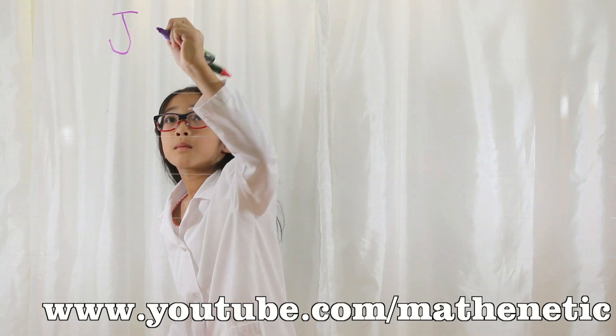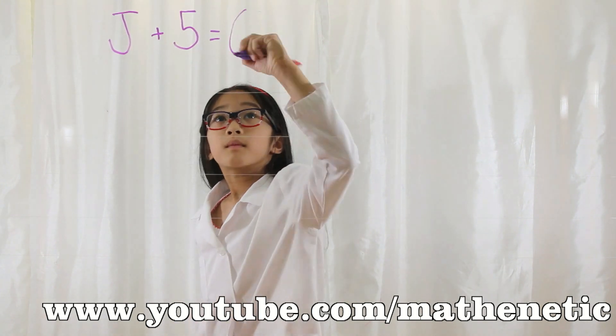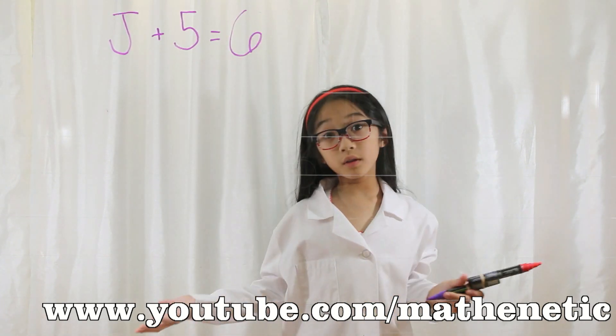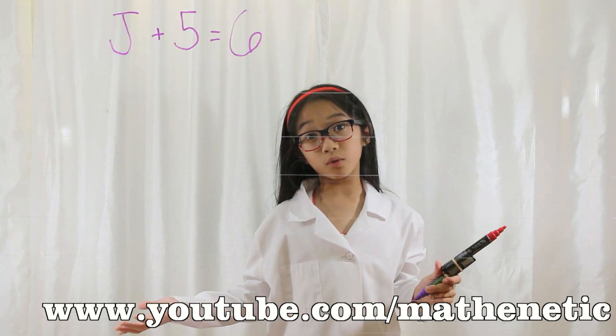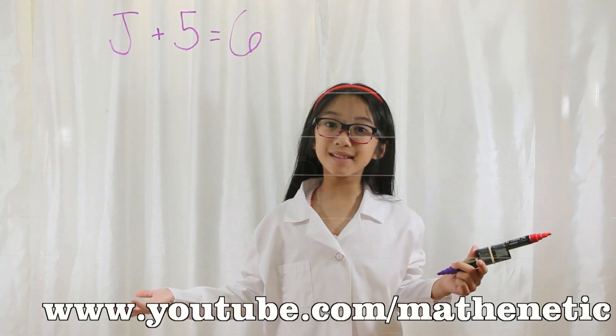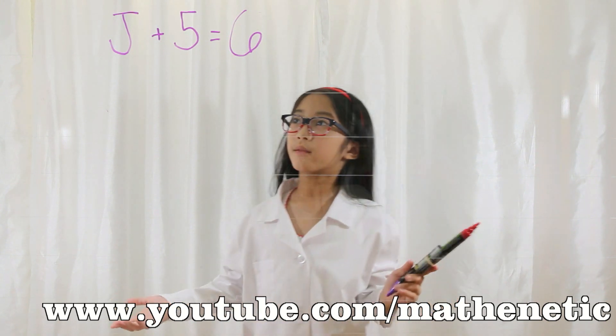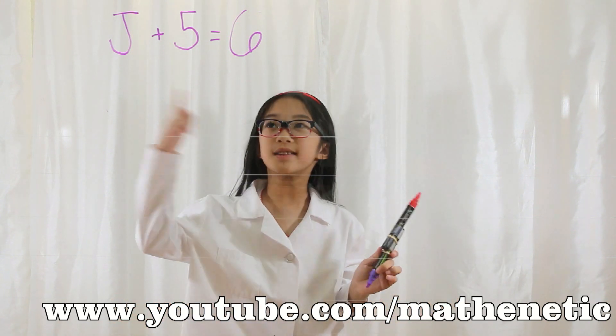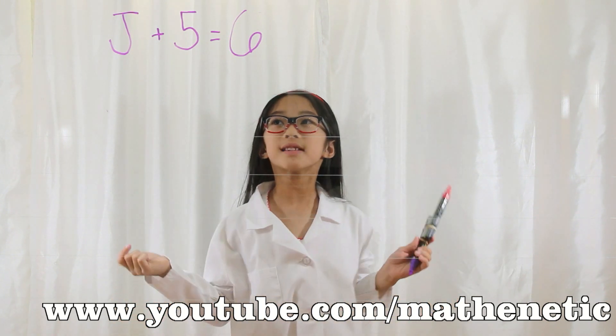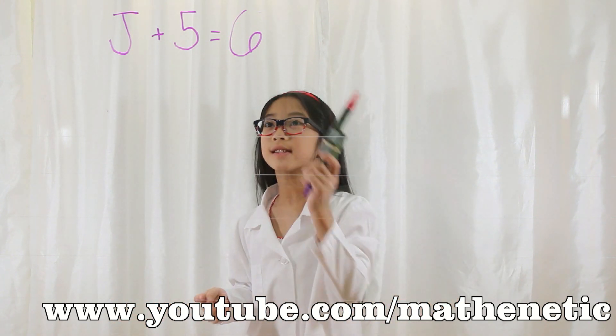Let's say your equation is j plus 5 equals 6. What are the variables? What are the constants? Well, there's only one variable — that is j. And the constants are 5 and 6.